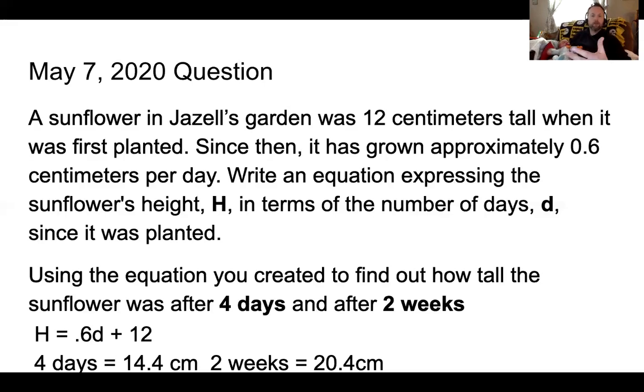So as Giselle's sunflower grows, it started out at 12 centimeters. We know that at zero days it was 12 centimeters, at day one it was 12 centimeters plus an extra 0.6 centimeters, so it'd be 12.6 centimeters. At day two it would be 13.2 centimeters. By day four it's up to 14.4 centimeters, by day 14 it is 20.4 centimeters. Easy peasy lemon squeezy. Now onto what you have to do for today.